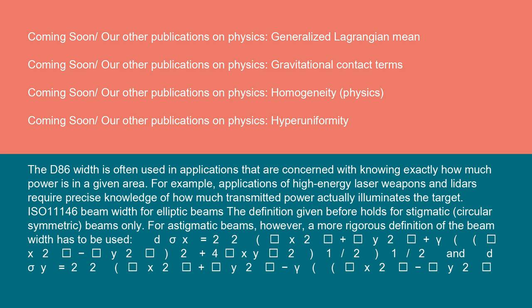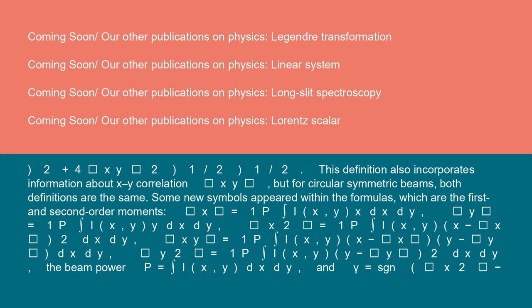And D_σy = 2√2[√(⟨x²⟩ + ⟨y²⟩ - γ√((⟨x²⟩ - ⟨y²⟩)² + 4⟨xy⟩²))]^(1/2). This definition also incorporates information about x,y correlation ⟨xy⟩, but for circular symmetric beams, both definitions are the same.